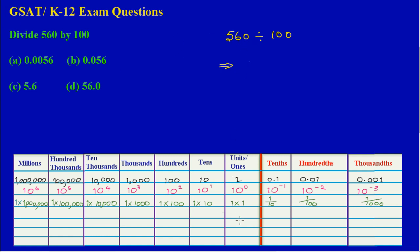If you think about place value: the zero in 560 is in the units column — the far right digit. The 6 is in the tens column and the 5 is in the hundreds column. Since 560 is a whole number, the decimal point sits right at the end, after the zero.